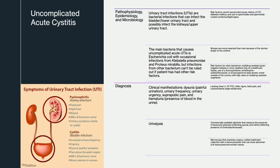Uncomplicated acute cystitis is a common urinary tract infection, or UTI, where bacterial infection affects the lower urinary tract and the bladder. Some risk factors include recent sexual history, histories of UTIs, diabetes, and the use of spermicides. The main bacteria that causes uncomplicated acute cystitis is E. coli with occasional infections from other bacteria. Factors for other bacteria include inpatient stay at a healthcare facility, the use of fluoroquinolones or Bactrim, and travel outside of the country with high rates of multi-drug resistant organisms.